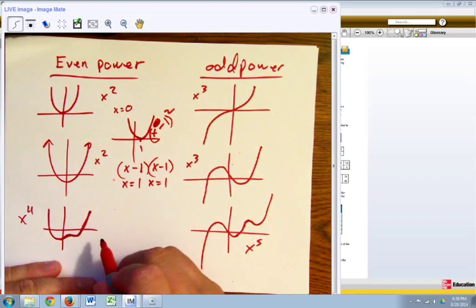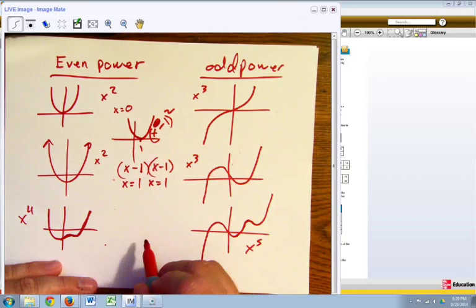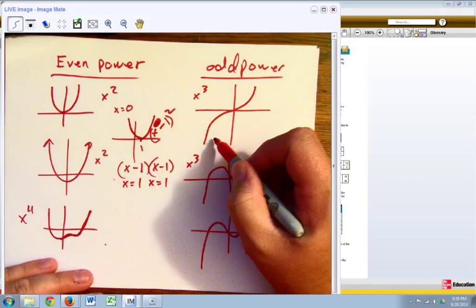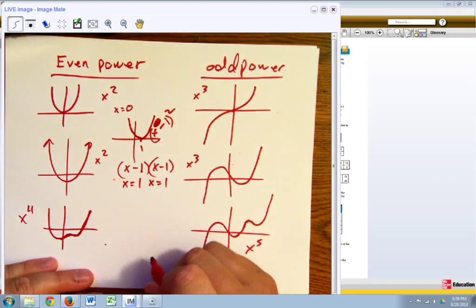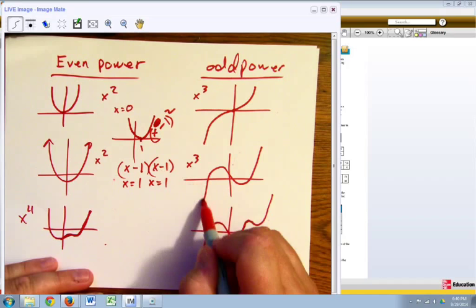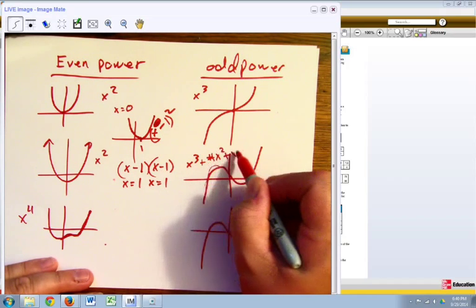Now we also have seen a cubic function where it crosses just once here at 0, 0. In this case we have a cubic function, but it's going to have a number of other pieces that go along with it.